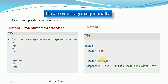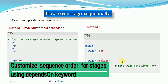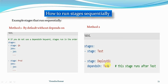On my screen, Method 2 shows the dependsOn approach. We have an array of stages defined: the first is stage 'test' and the second is stage 'deploy-us1'. After the test stage executes, we want to execute deploy-us1. Under that stage we write the dependsOn keyword with the value 'test', which gives us the ability to run stages one after another. So the deploy-us1 stage will run after the test stage is executed.